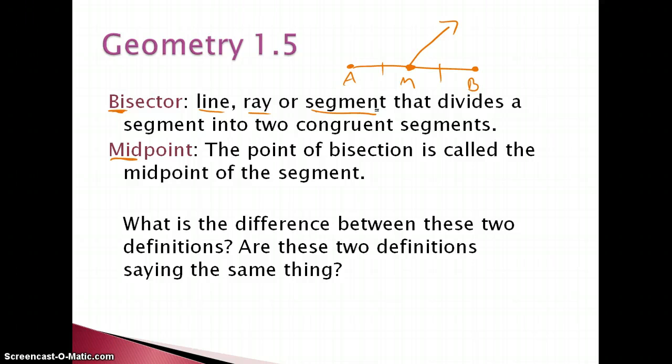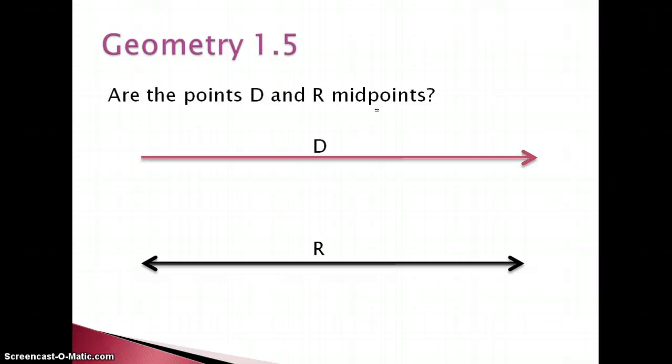Are D and R midpoints? So here we have a ray which we know has a starting point and goes forever in one direction. So can D be a midpoint if it's going forever in a particular direction?